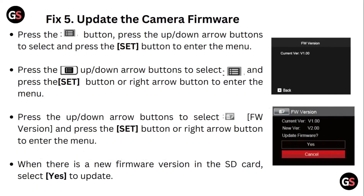Fix 5: Update the camera firmware. Press the menu icon button, then use the up/down arrow buttons to select and press the Set button to enter the menu. Navigate using the slide button and arrow buttons to select the firmware icon, then press Set or the right arrow to enter. Press up and down to select the SD card FW version option and press Set. If a new firmware version is found on the SD card, select Yes to update.